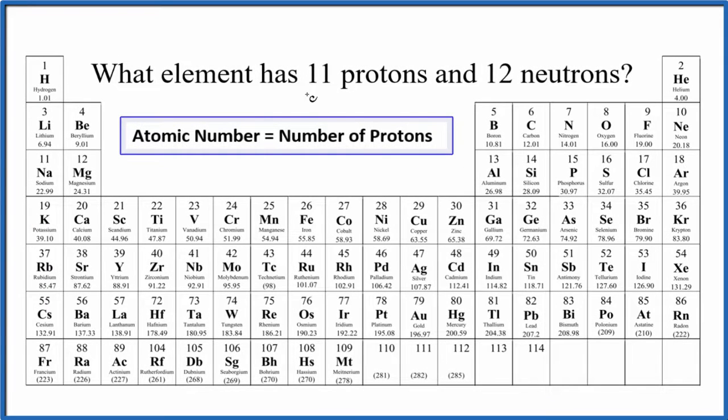So what element has 11 protons and 12 neutrons? And how do you figure that out? So to start off, we have our periodic table here. And you need to know that the atomic number, that's equal to the number of protons.